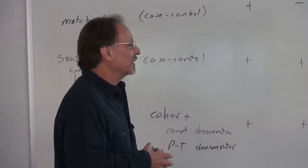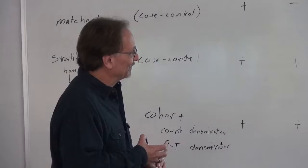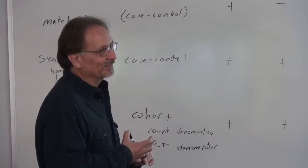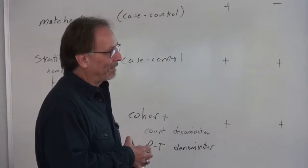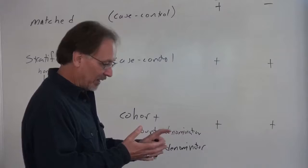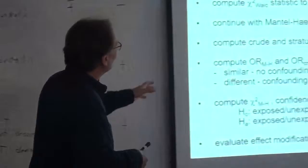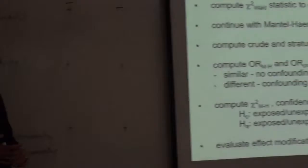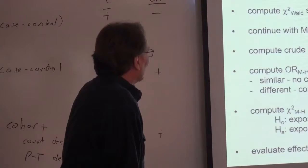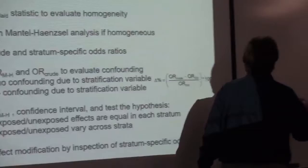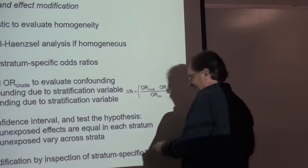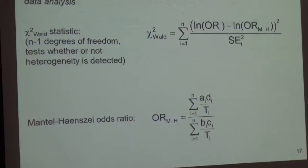My intent with the homework is to give you large questions so that it gives you an opportunity to practice. On the exam, I wouldn't give you more than two strata. In homework, I don't feel so constrained — you should practice. I'll probably make up a little sheet of something generic that's handed out to you. The crude odds ratio is computed by collapsing the strata — A1 plus A2 plus A3 — you collapse it by taking away the stratification.